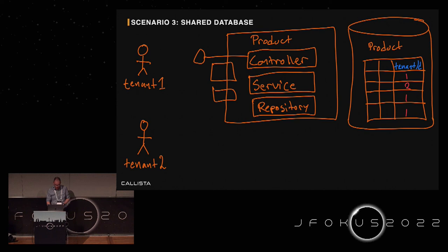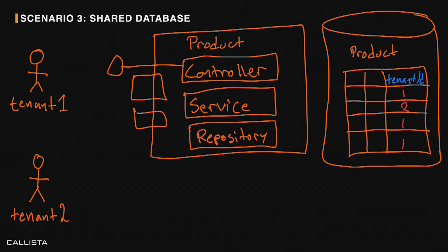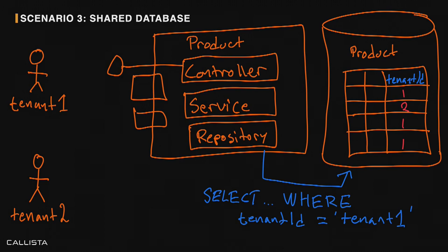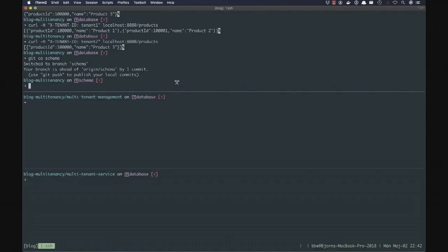Moving on to the third implementation: shared database. Now we only have one data model, so we no longer treat Liquibase migrations specifically. But instead we must be very sure that for every query we issue, we always include an additional where condition, and for every mutation we provide the correct tenant ID. That is something you don't want to do in all your repository implementations — you really want a mechanism to apply to an otherwise unaffected application.